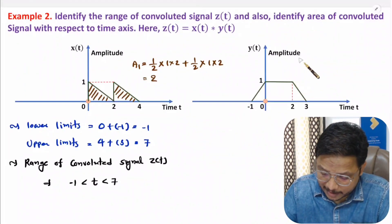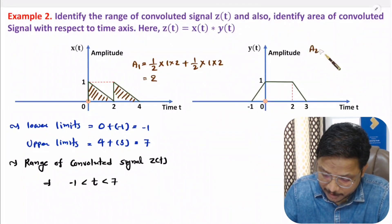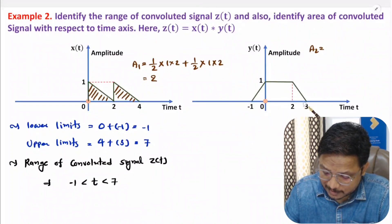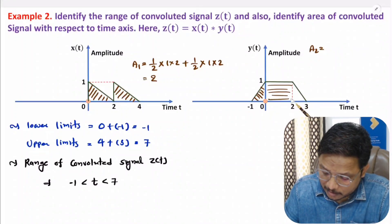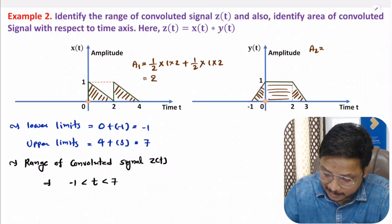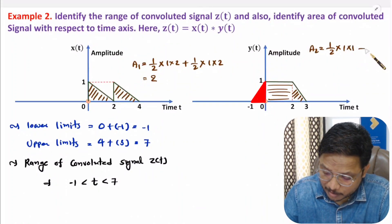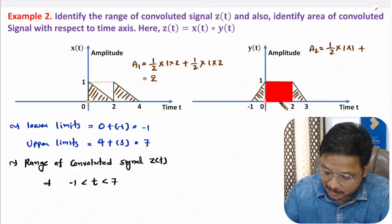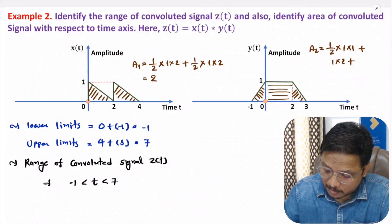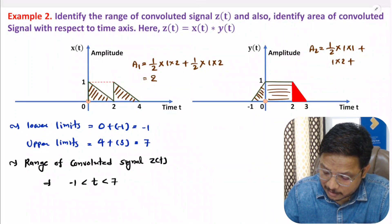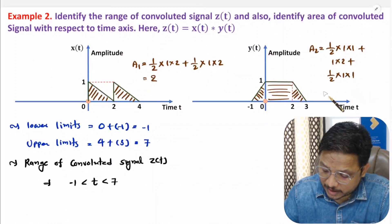To identify the area covered by Y(t), it is divided into 3 regions. The first region is a triangle: half of height times base, which is 1 times 1. Plus the area of a rectangle: 1 times 2. Plus a third triangular area: half of height times base. So the total area A2 is one-half plus 2 plus one-half.